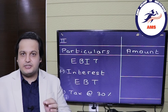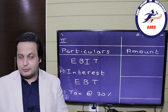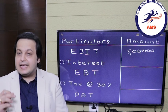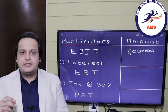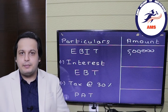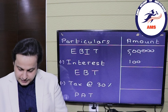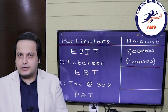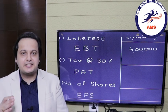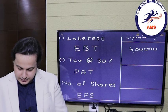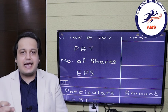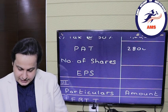Next, we move on to situation number 2, in which there was a debt of 10 lakh rupees. The EBIT remains the same at 5 lakh rupees. The interest in situation 2 is 1 lakh rupees — because there is a loan of 10 lakhs and the interest rate was 10%. Deducting 1 lakh from the EBIT gives us earnings before tax of 4 lakh rupees. Tax at 30% comes out to rupees 1 lakh 20,000, leaving a profit after tax of 2 lakh 80,000 rupees.